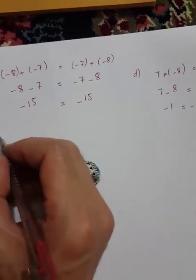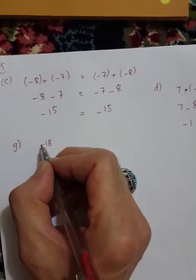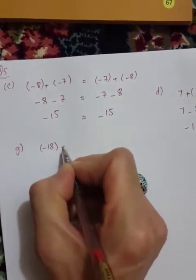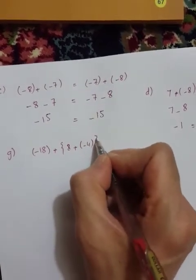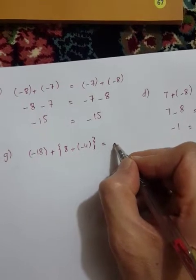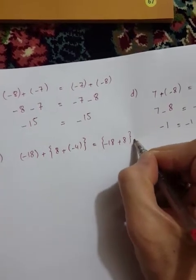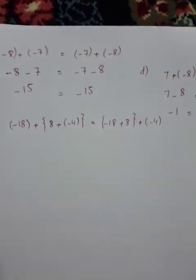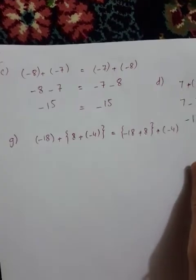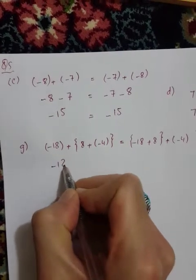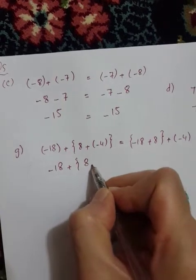Now part g: minus eight plus seven equals minus eight plus eight plus minus four. First, minus eighteen plus eight plus minus four. Simplifying the left-hand side: minus eighteen plus eight.